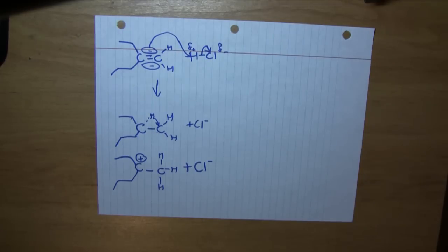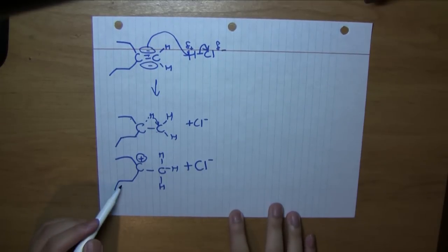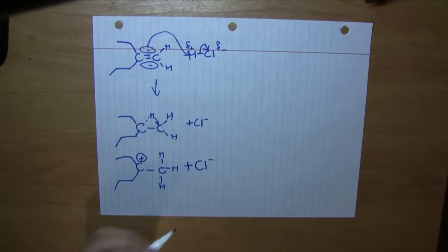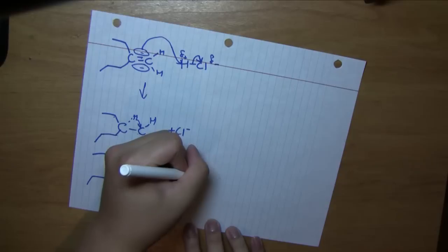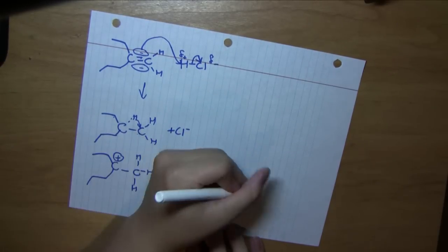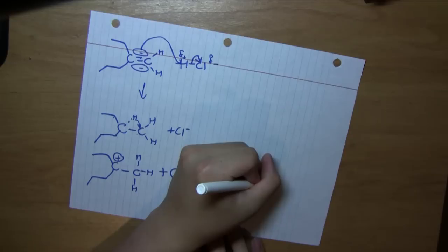However, if you notice on this carbon here, we have three different groups — no groups are identical. We have an ethyl group, a propyl group, and a methyl group. Because of that, we can form two enantiomers. Now, what would the product be if we had the Cl attack from the top side? Using wedges and dashes to show 3D, we get this structure.